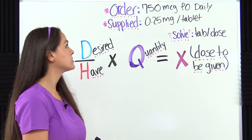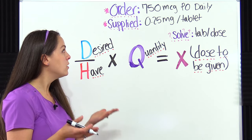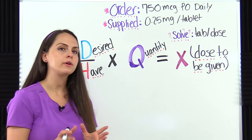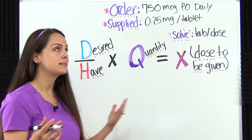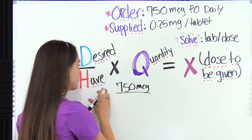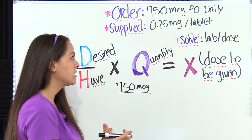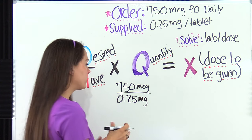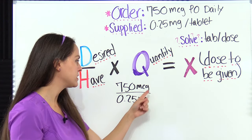This problem says the physician orders 750 micrograms by mouth daily and we're supplied from pharmacy with 0.25 milligrams per tablet. We need to figure out how many tablets per dose. We start with D, the desired ordered dose: 750 micrograms. Over H, what we have on hand — the medication label tells us the strength is 0.25 milligrams. We can already see we'll have to take an extra step and convert because these units — micrograms and milligrams — are not matching up.